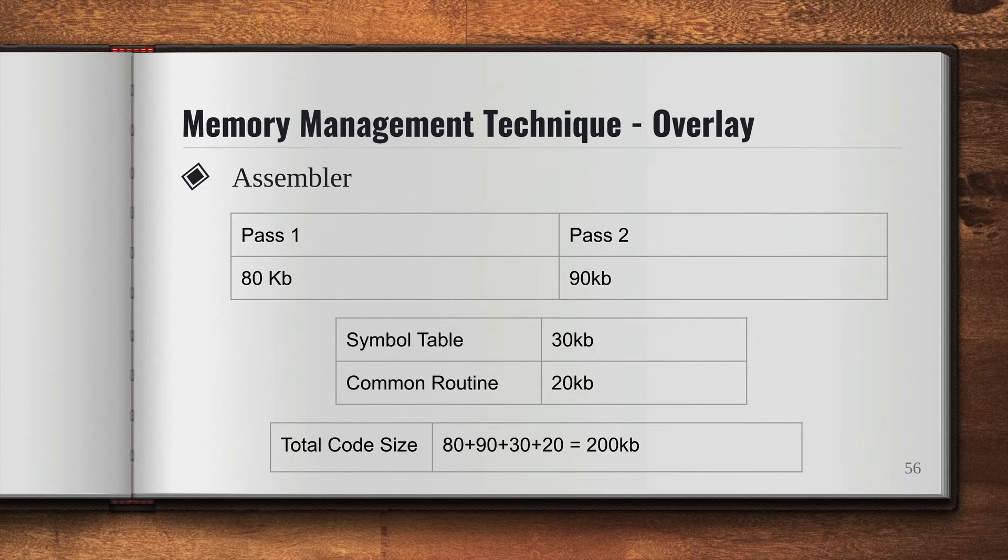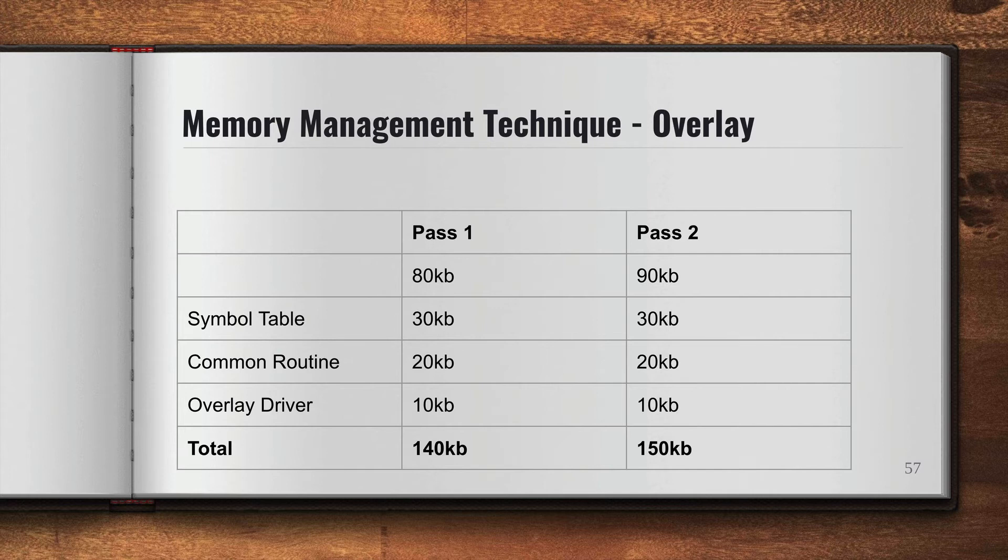Let's see how we can achieve that. If we bring pass one, the size will be 80 KB. Symbol table and common routine need to stay in the memory. For overlay concept, we need to have the overlay driver also, so 30 plus 20 plus 10 needs to be there in the main memory for both programs. When we are running pass one, the total size becomes 80 plus 30 plus 20 plus 10, which is 140. Pass two becomes 90 plus 30 plus 20 plus 10, which is 150 KB.